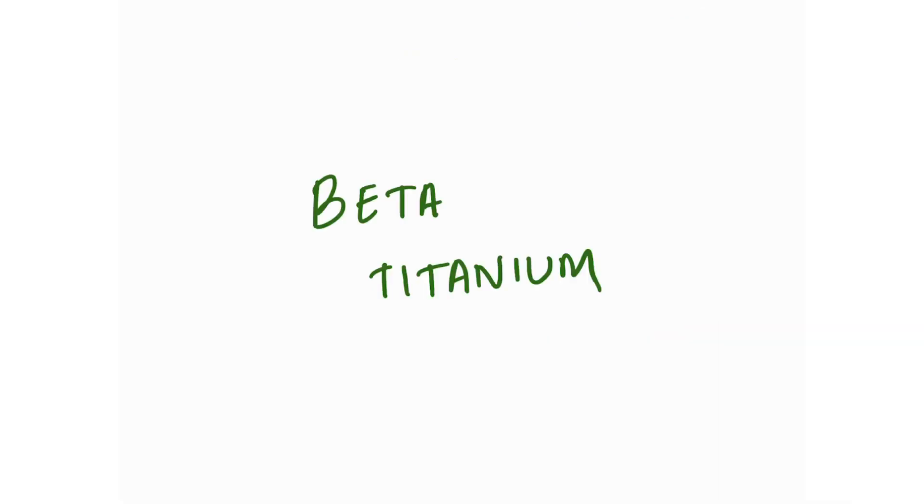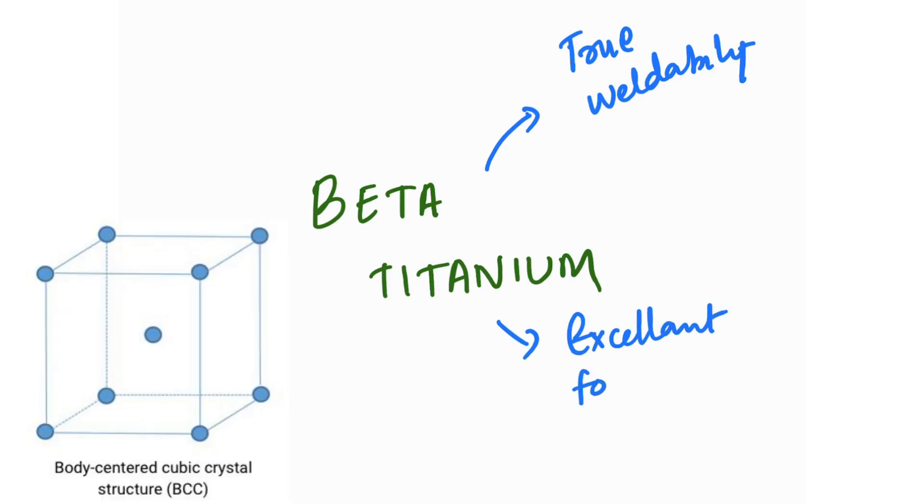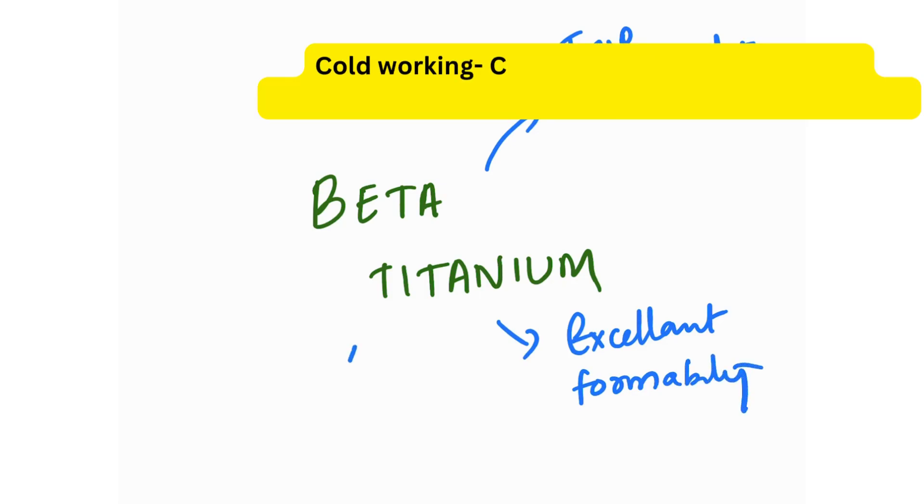Next, we learn about beta titanium. Beta titanium shows true weldability and excellent formability. This is due to its BCC structure, so it can be bent into various orthodontic configurations.